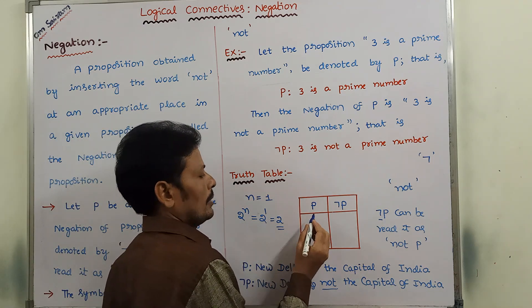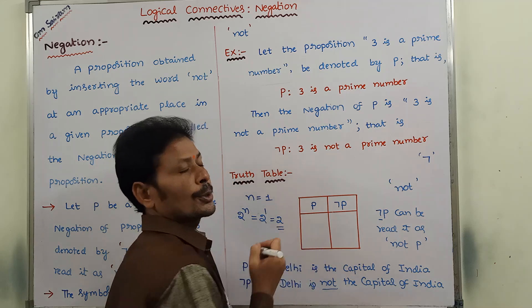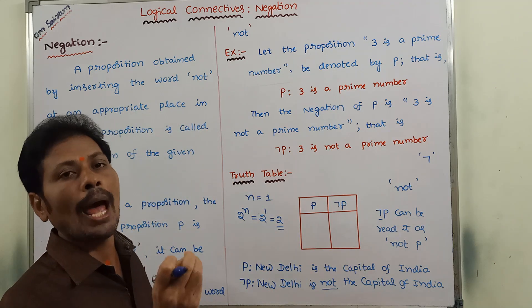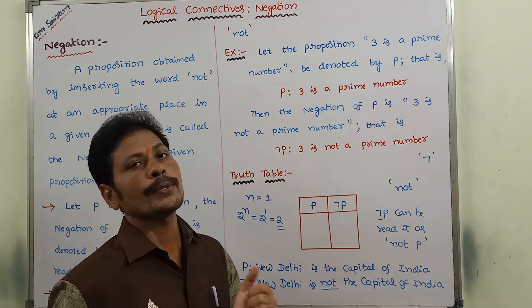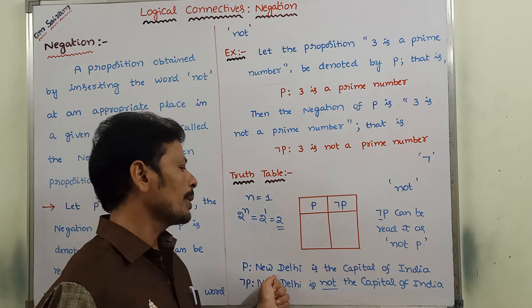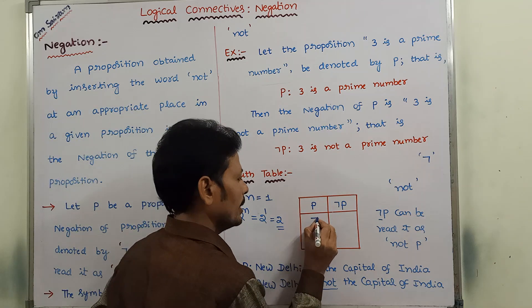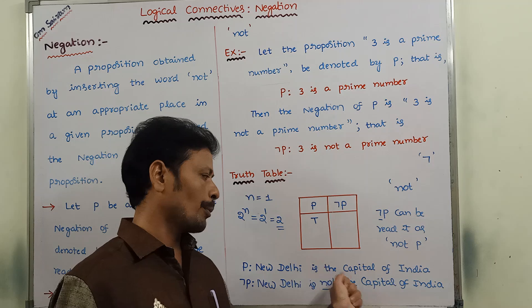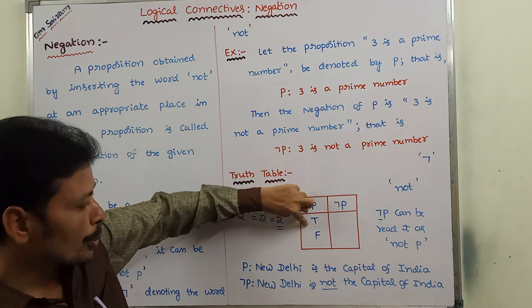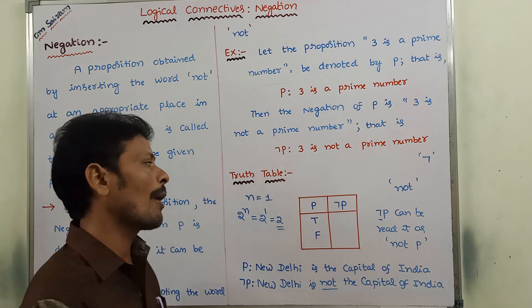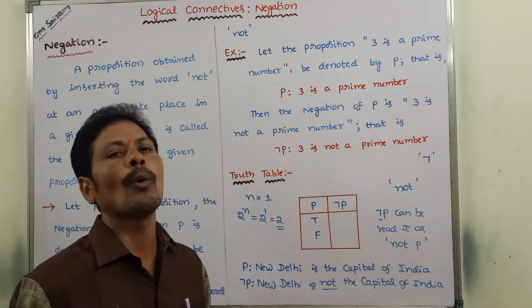The first column of the truth table contains the possible truth values of the given proposition P. Suppose 'New Delhi is the capital of India': if the proposition is true, we represent that; if false, we represent that. So P may be true or false — two possible truth values.